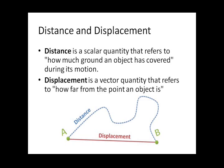Let's look at distance and displacement. Distance is a scalar quantity — it talks about how much ground an object has covered during its motion. Displacement is a vector quantity — it refers to how far an object is from its starting point. Imagine a person travels from point A to point B along a blue dotted road — that path is the distance. But displacement is the straight line from point A to point B — the shortest possible distance. So displacement is going to be less than distance in this case.